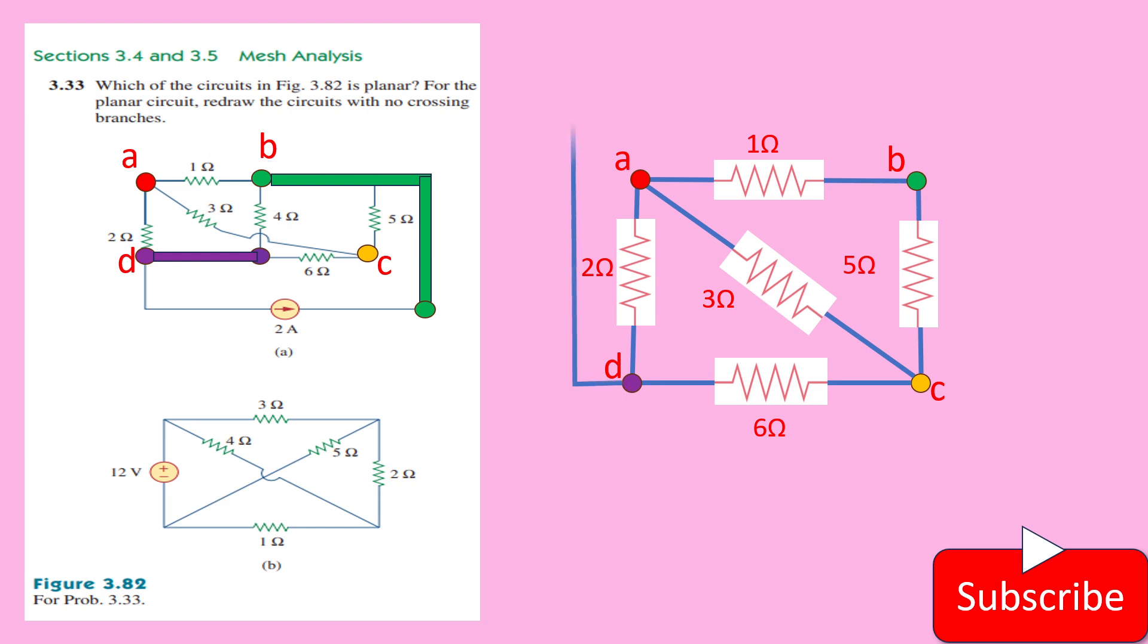And between this B and D, if you look at this 4 ohm resistance is available. This is the one which will cast the crossing. In order to avoid that crossing, we have taken it like this. And between this B and D, we want 2 ohm resistor current sources available. We have redrawn this circuit and we don't find any crossing branches. That's why it's a planar circuit.